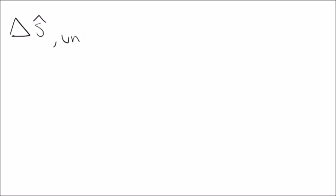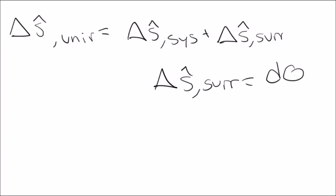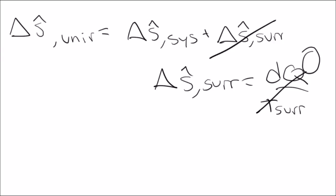The end goal is to find the change in entropy, so we perform an entropy balance. The entropy balance equation is: change in S universe equals change in S system plus change in S surroundings, which equals the change in Q over the temperature of the surroundings. Since Q equals zero for this process, that entire term becomes zero. We are left with change in S universe equals change in S system.